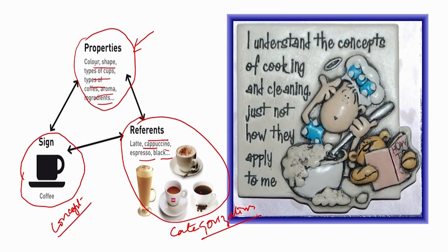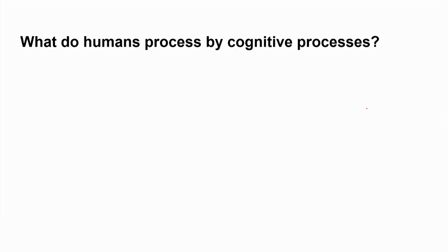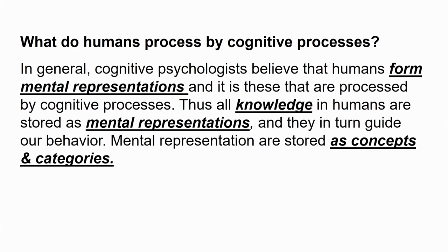A funny cartoon here shows a lady saying, 'I do understand the concept of what cooking is; I just don't know how it applies to me.' Coming back to the definition of concepts — before we understand that, let us look at what humans do through cognition. Cognitive psychologists believe that humans form mental representations which are then processed by cognitive processes.